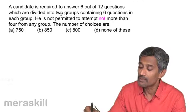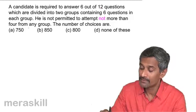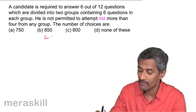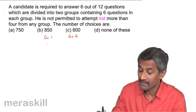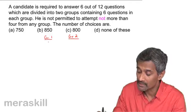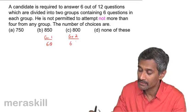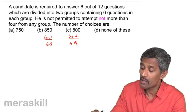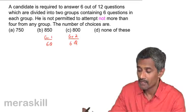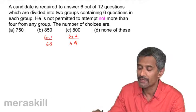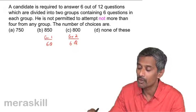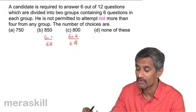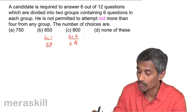A similar kind of question: a candidate is required to answer six out of twelve questions, which are divided into two groups containing six questions each. He is required to answer six in total. He is not permitted to attempt more than four from any group — meaning the maximum he can choose from either group is four, not more than four.